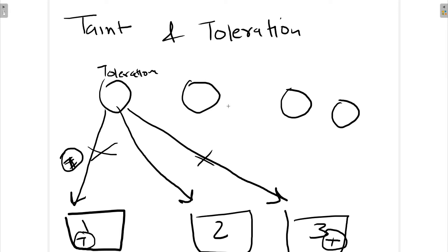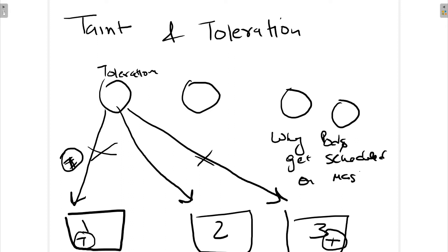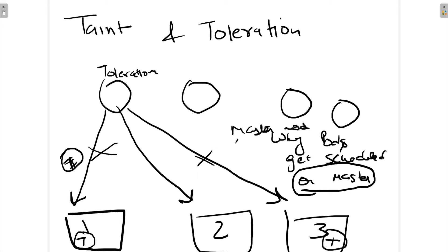One thing I'd like to point out — have you ever noticed that by default, pods don't get scheduled on the master node? Whenever we create a deployment or a replica set, none of the pods go and get scheduled on the master node; they run on worker nodes. This is because the master node has a taint applied to it. When you create a cluster, there's already a taint on the master node. We'll check that as well, and then go into our cluster to see taints and tolerations in practice.